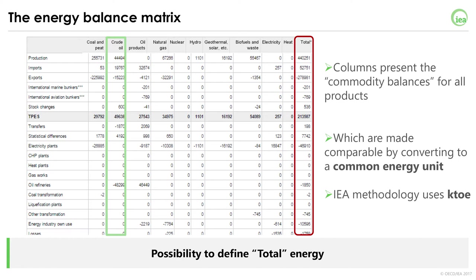At the IEA Energy Data Center, we have opted for KTOE — kilotons of oil equivalent — as our standard common energy unit for energy balances. So all the numbers in this table are expressed in KTOE.